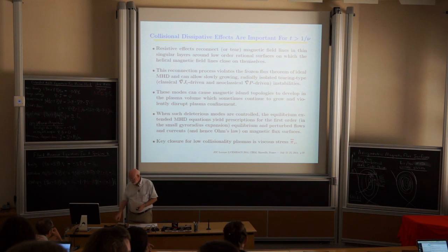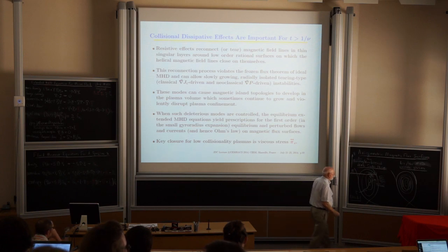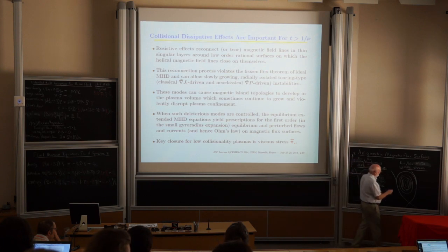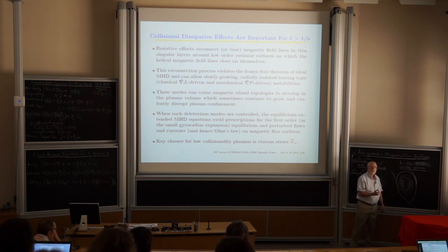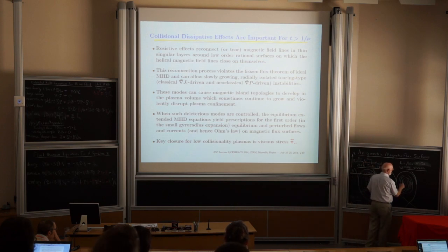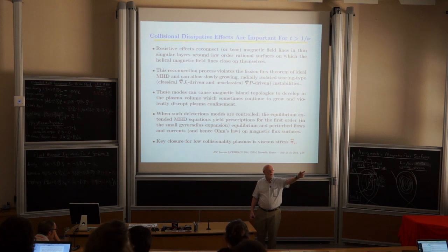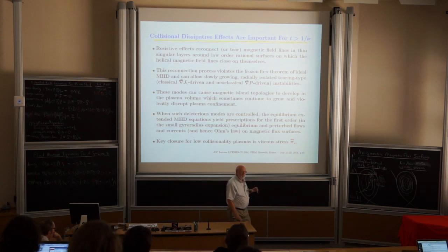Then there are neoclassical tearing modes, which are pressure gradient-driven by the bootstrap current. If a neoclassical tearing mode gets going when you reach high enough pressure — beta_N of about 2, beta_poloidal about 2 — you start building up a magnetic island in the plasma, twisting around with 2/1 pitch.